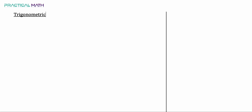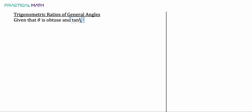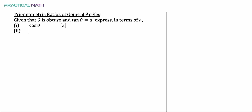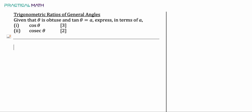In this video, we'll be discussing trigonometric ratios of general angles. Given that theta is obtuse and tangent theta is equal to A, express in terms of A: part 1, cosine theta, which is a 3-mark question, and part 2, cosecant theta, which is a 2-mark question. You may want to pause this video to give this question a try, and when you're ready, keep watching.